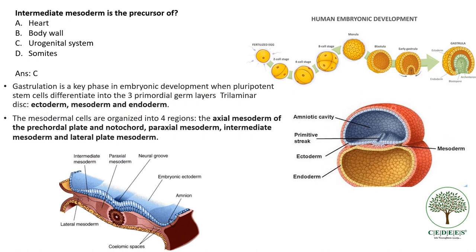This is the gastrula. It is lined by the blue cells which are the ectodermal cells, the yellow cells which are the endodermal cells, and in between these two there is rapid growth of cells which form the mesoderm. Now if we take a cross section from this area, we will get this image — this is the ectoderm, the blue one, the endoderm, and in between the cells have divided to give rise to the mesoderm.